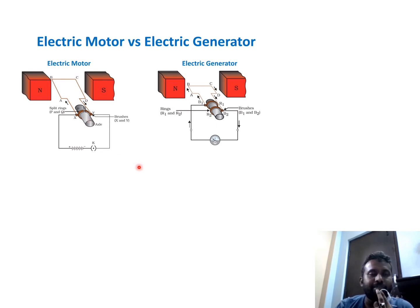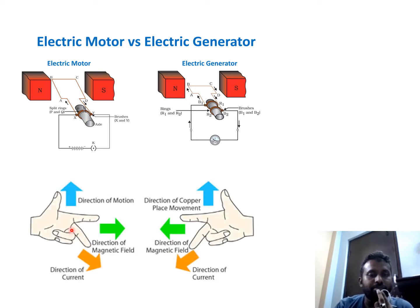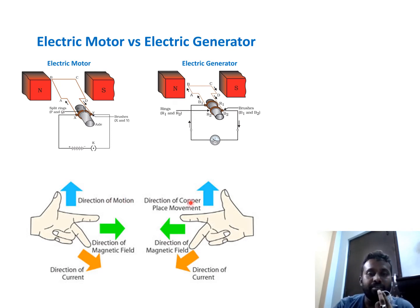The motor works on Fleming's left-hand rule and the generator on Fleming's right-hand rule. If you stretch your thumb, forefinger, and middle finger such that the forefinger points in the direction of the magnetic field, for a motor the middle finger indicates direction of current and the thumb gives the motion of the conductor. For the right-hand rule, the forefinger represents magnetic field, the thumb represents direction of motion, and the middle finger gives the induced EMF or current.